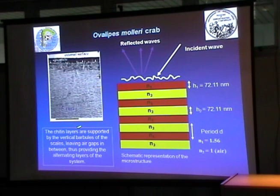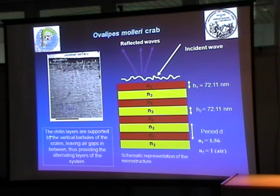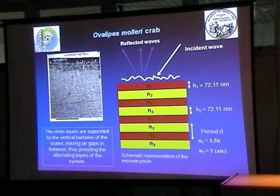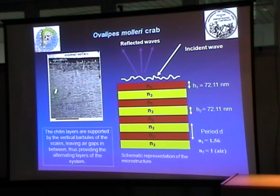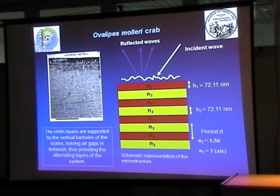In this case, the two layers are air and chitin. Chitin is one of the biological materials most widespread in beetles, butterflies, and many of these species. There are vertical barbules that are responsible for keeping the air gaps between layers, thus maintaining this proper multilayer structure.